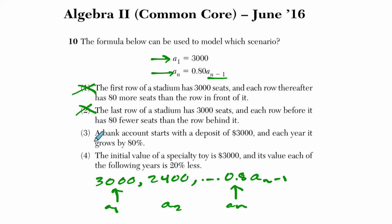And then choice 3 says, a bank account starts with a deposit of 3,000 and each year it grows by 80%. In that case, a sub n would be equal to 1.8 times a sub n minus 1. In other words, 180% of the previous term.